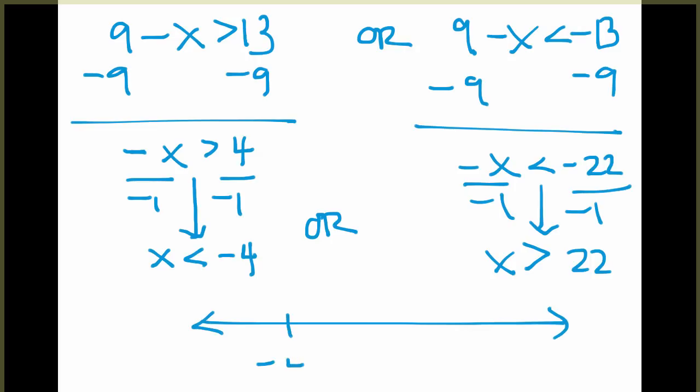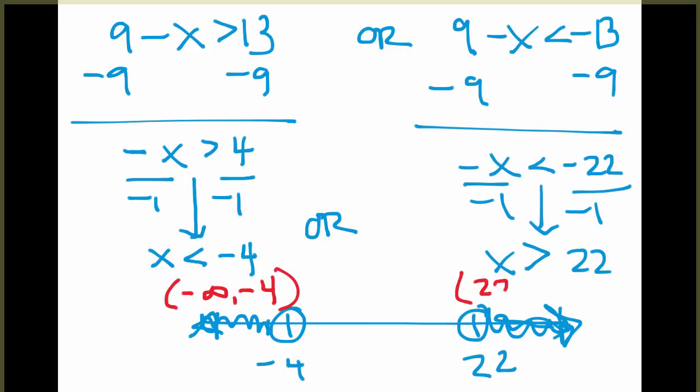So on the number line, less than negative 4 is to the left, greater than 22 is to the right, and so our solution is going to be written in two pieces. On the left, the way that we would describe this piece would be negative infinity to negative 4, all with parentheses, and on the right, this would be described as 22 to infinity.